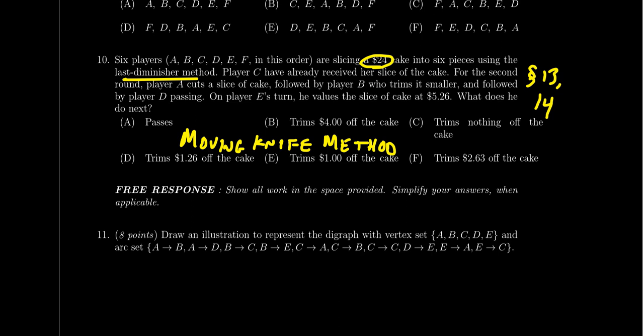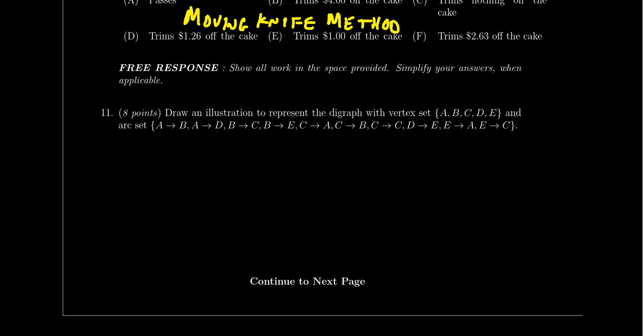Question 11 begins the free response section and asks you to draw a digraph. You might be given vertices and arcs to draw, or a project with tasks and precedence relations from which you construct the project digraph. This is worth 8 points. The key requirements are: correct number of vertices, correct number of arcs, and all arcs pointing in the right directions. This material comes from lesson 10.